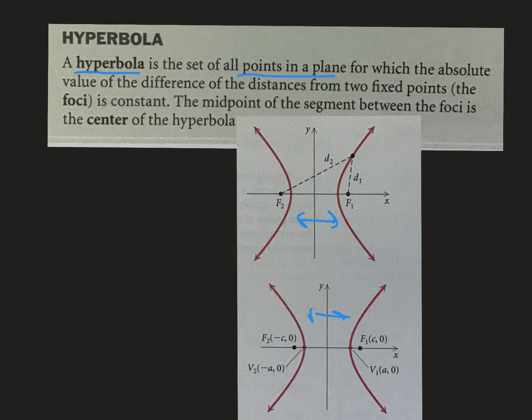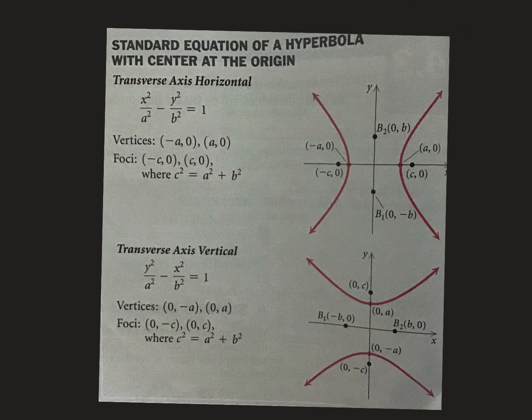A hyperbola is a set of all points in a plane, means it's flat, for which the absolute value of the difference of the distances from two fixed points, the foci, is constant. The midpoint of the two foci is the center. If you pick any point on the hyperbola and find the distance from there to each focus and subtract them, it would be the same. You'd get the same exact number.